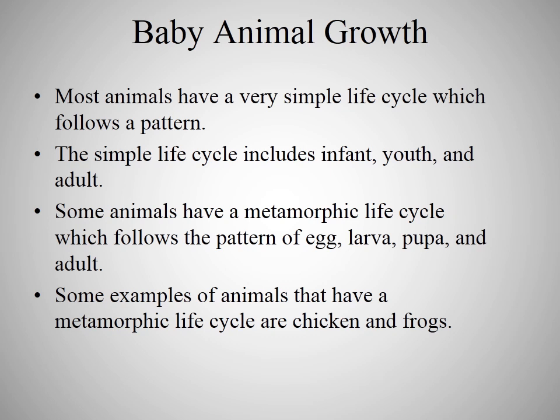Now we will understand about baby animal growth — how an animal grows. Most animals have a very simple life cycle which follows a pattern: infant, youth, and adult. Some animals have a metamorphic life cycle which follows a pattern of egg, larva, pupa, and adult.